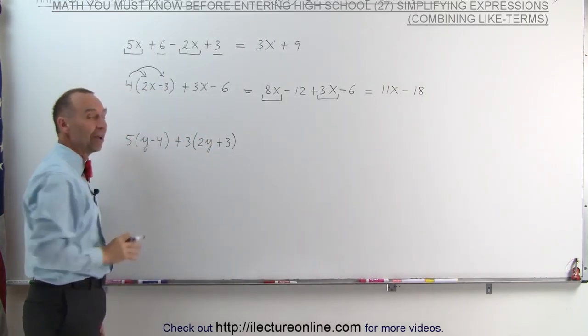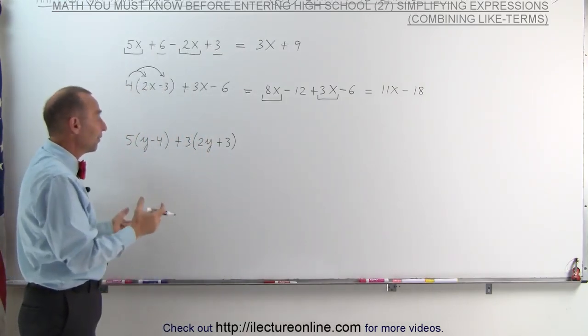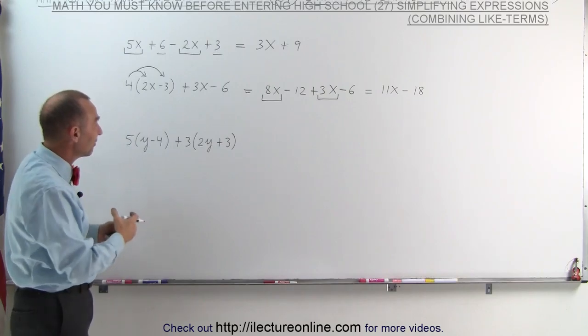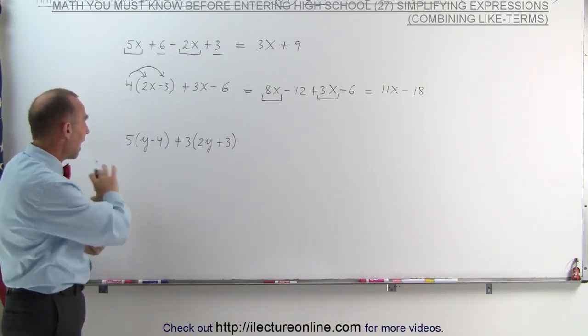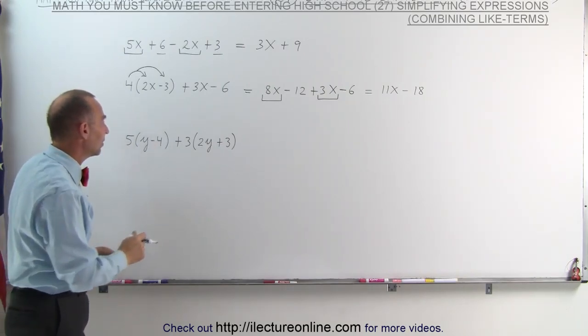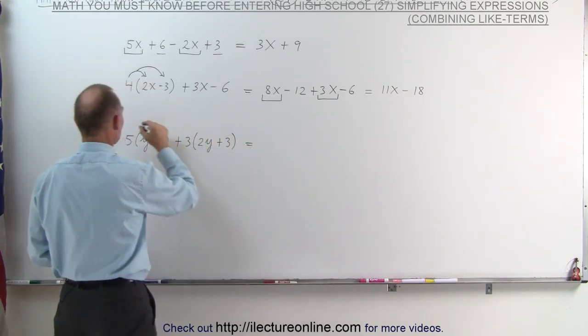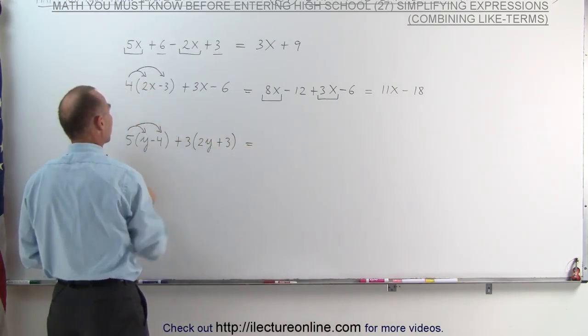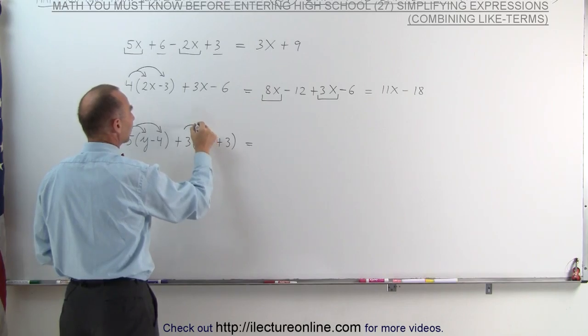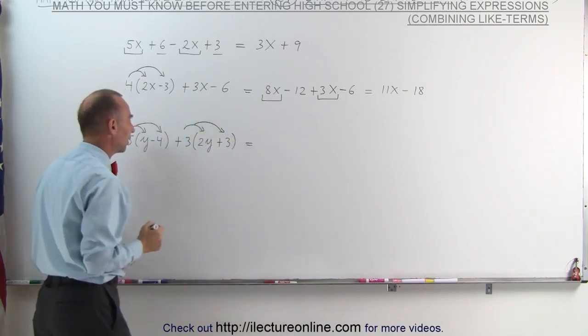On the third example, again, we have parentheses. Notice that we have a different letter, but it doesn't matter. Let's see if we have like terms that we can combine after we get rid of the parentheses. Again, we're going to distribute the 5 on the first term and the second term in the parentheses, and the 3 on the first term and the second term in the parentheses.